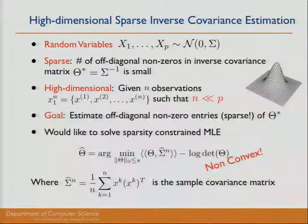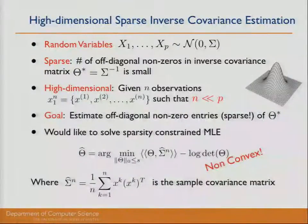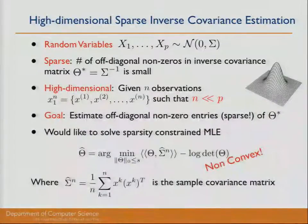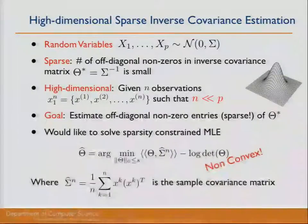Given n observations x1 through xn, such that the number of observations is much smaller than the number of random variables in the distribution, our goal is to estimate the off-diagonal non-zero entries of the inverse covariance matrix, which we often denote by theta star.